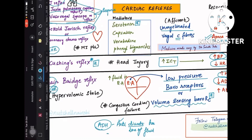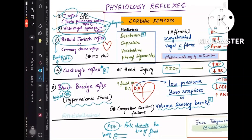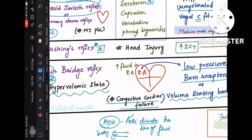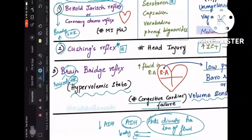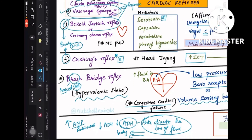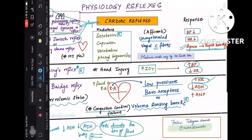In a hypervolemic state such as congestive cardiac failure, there is already high fluid load in the body, so anti-diuresis must decrease — meaning decreased ADH. Additionally, atrial natriuretic peptide (ANP) increases natriuresis, promoting fluid loss. So the response is: increased heart rate, decreased ADH, and increased ANP.